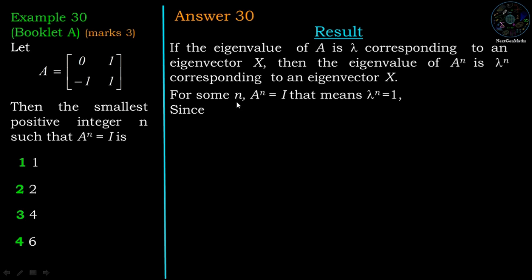Suppose for some n, A power n is equal to I. That means nth power is identity matrix, and the eigenvalues of identity matrix are 1. Therefore, lambda power n should be 1. So we try to find the power of lambda 1 and lambda 2 which will give lambda 1 power n equal to 1 and lambda 2 power n equal to 1.